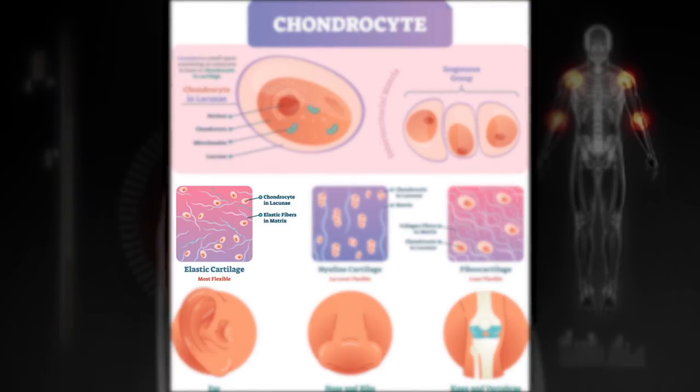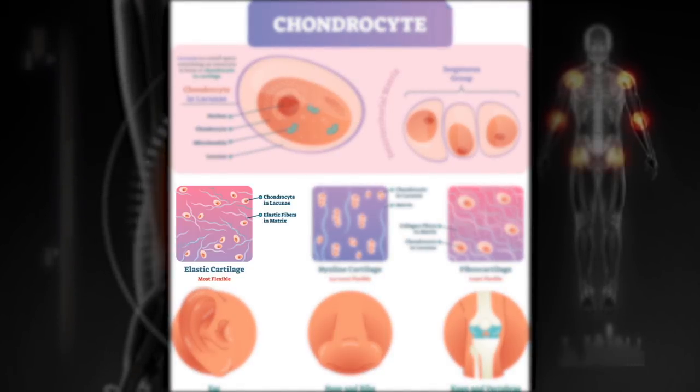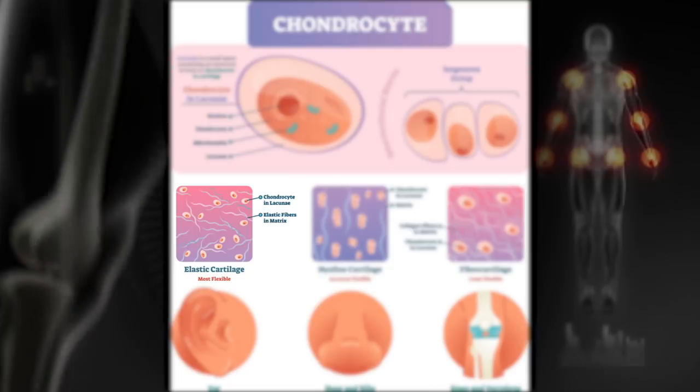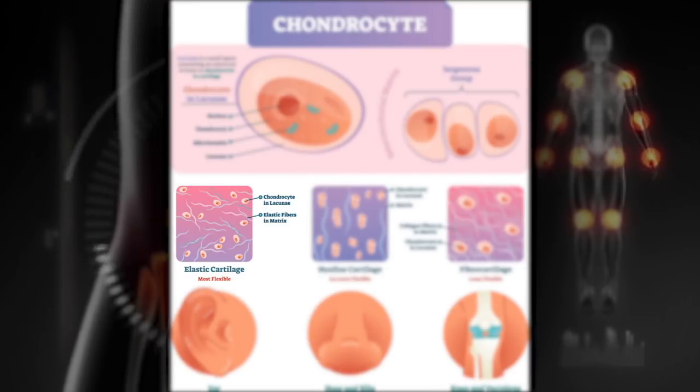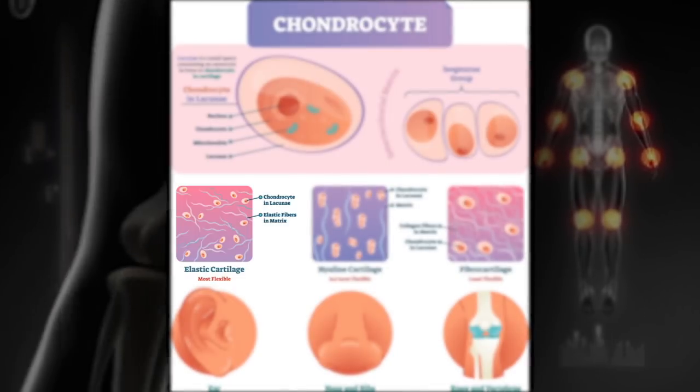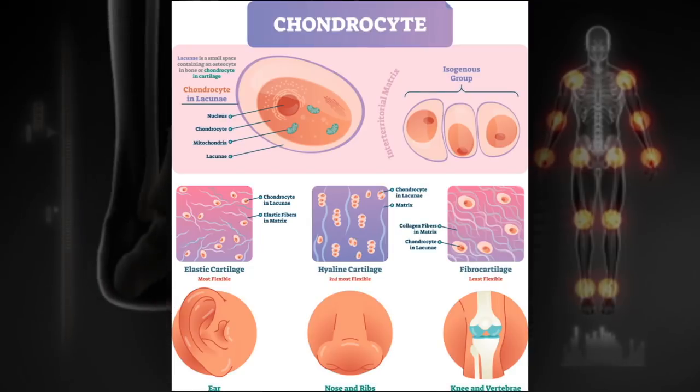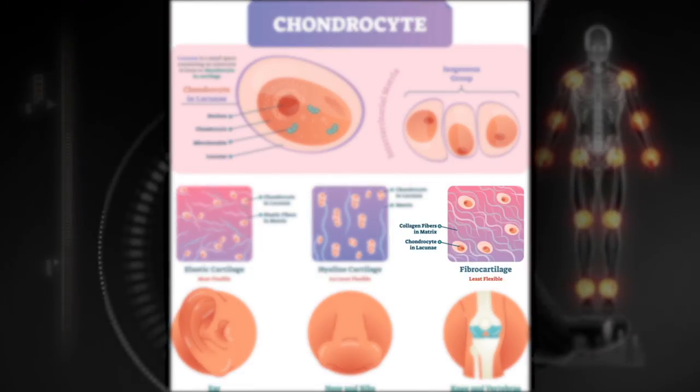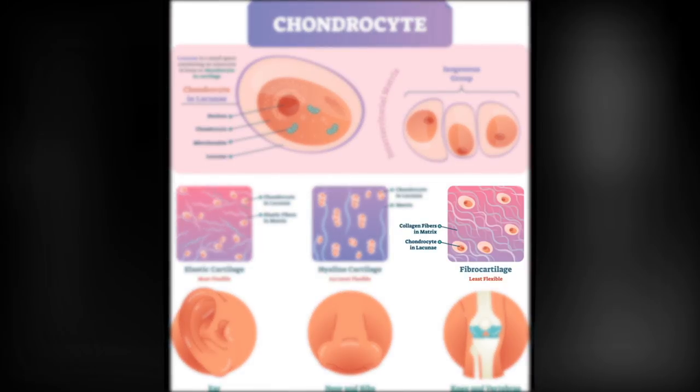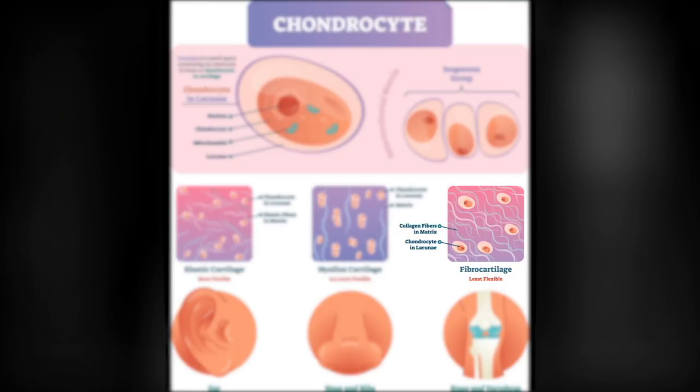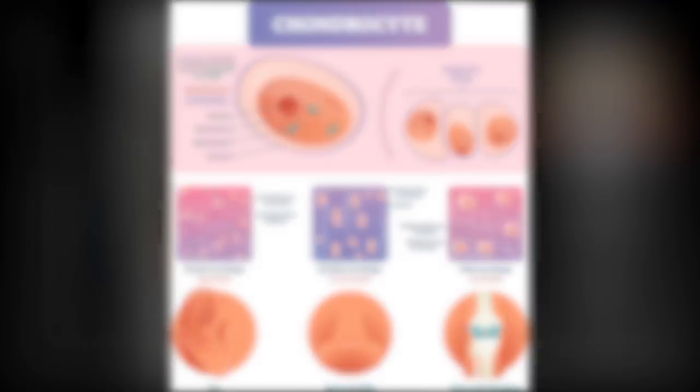Elastic cartilage. This is characterized by elastic fibers and elastic lamellae, in addition to the matrix material of the hyaline cartilage. This type of cartilage provides flexible support. Fibrocartilage. This cartilage is characterized by abundant type 1 collagen fibers, as the matrix material of hyaline cartilage. This type of cartilage resists deformation under stress.